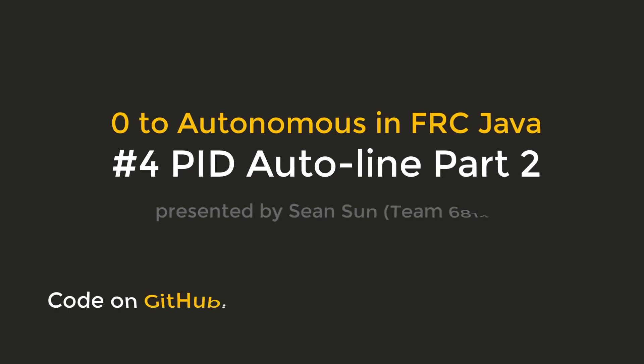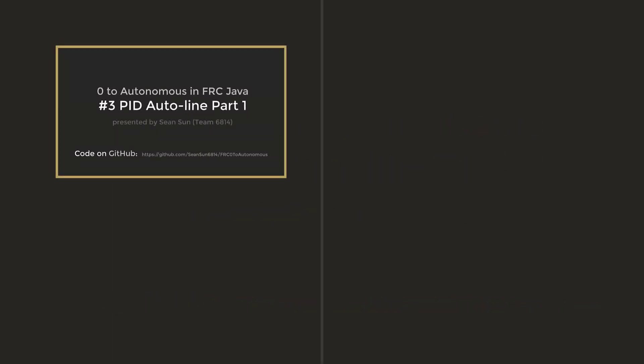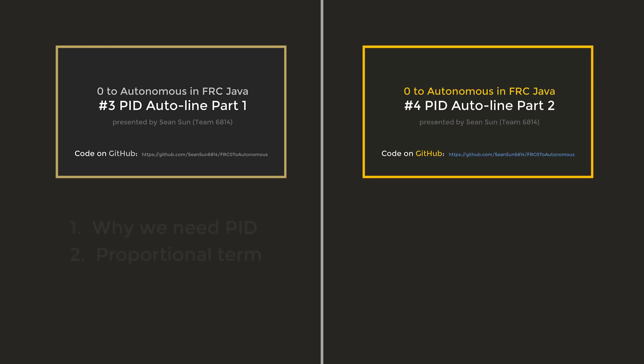Welcome to the fourth episode of Zero to Autonomous in FRC Java. This is part 2 of how to use PID to complete the auto-line task. In the previous video, we covered why we need PID and the proportional term. In this video, we will focus on the integral term and the derivative term.